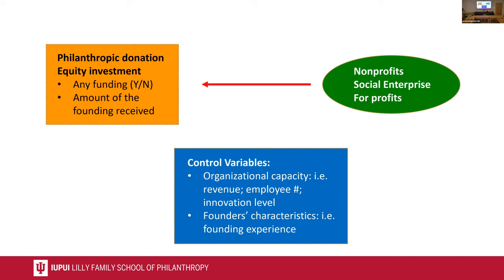The binary variables ask: Have you ever received philanthropy donations — yes or no? Have you ever received equity investments since your founding — yes or no? The second set asks how much you have received. Our independent variables are the different forms of organizations: traditional non-profit, social enterprises, and for-profits.